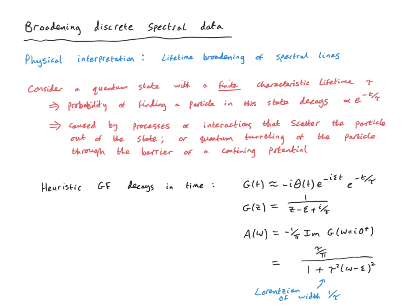We also get broadening of delta functions into peaks of finite width when we allow for electron-electron interactions due to Coulomb repulsion. There are various mechanisms for scattering that confer a finite lifetime to a state, and heuristically we can imagine this as simply broadening the poles — emulated by giving the frequency a small imaginary part.